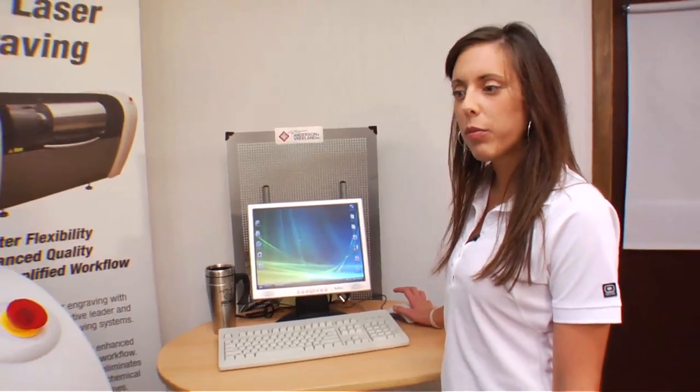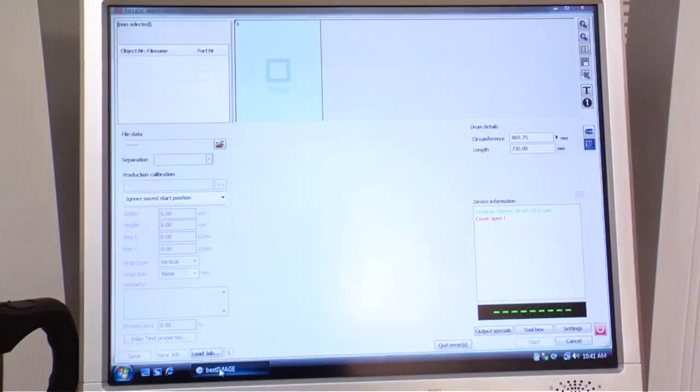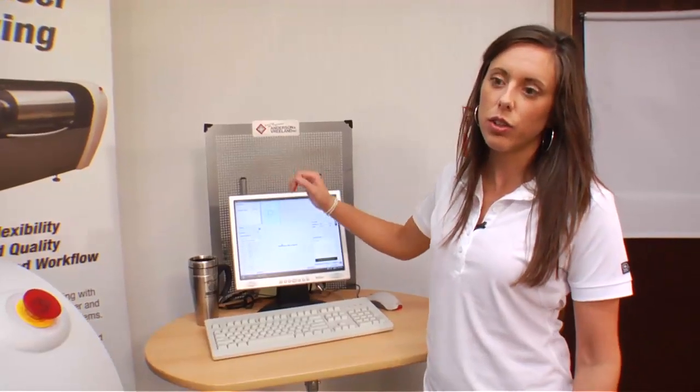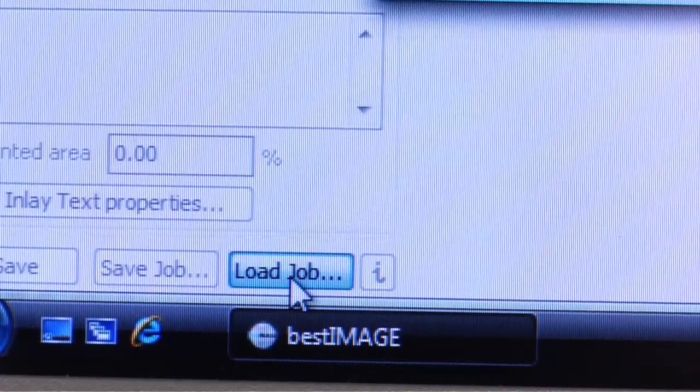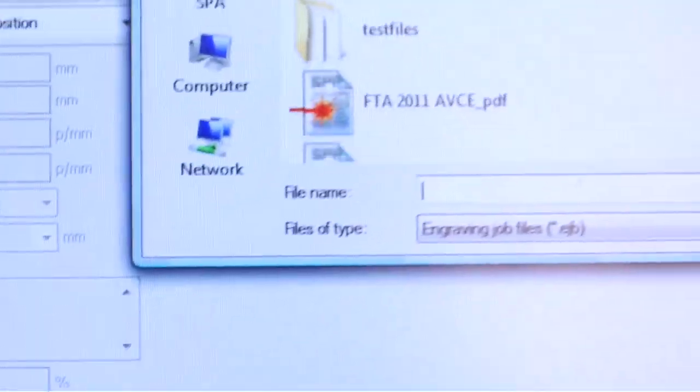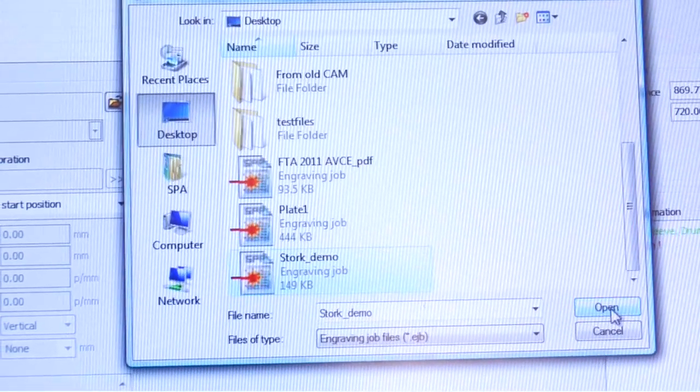So we are going to set up our file and prepare a file using the best image rip. I'm going to open this up. This gives our layout and we can arrange our files to image on the plate material through the software package. So I'm going to click on load job, choose a specific file that I've set up, StoreK demo, click open.